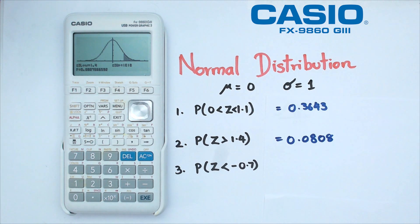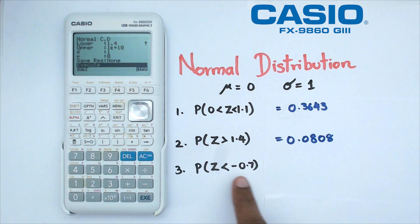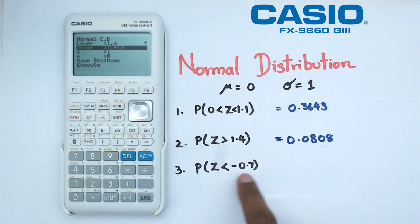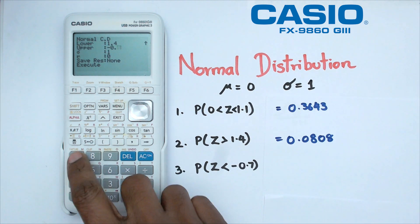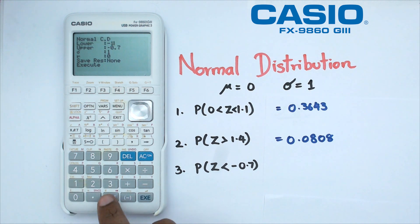And finally we've got question three here where we're trying to find probability of Z less than negative 0.7. So when it's actually less than negative 0.7, we're going to go down to our upper limit which is going to be negative 0.7 but our lower limit is going to be negative 1 times 10 to the power of 10.